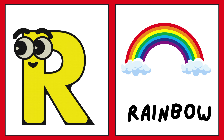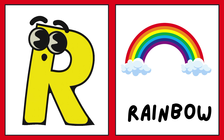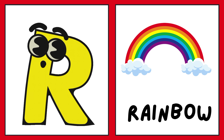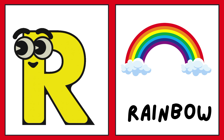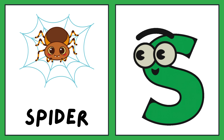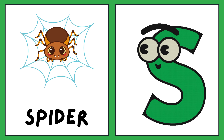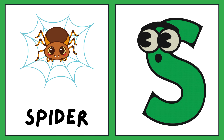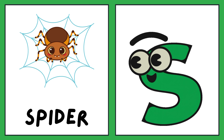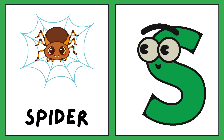R is for rainbow. R, rainbow. R, rainbow. R, rainbow. S is for spider. Spider. Spider. S, spider.